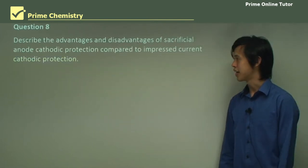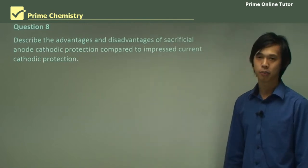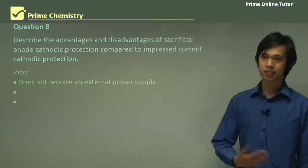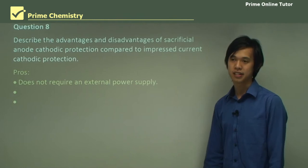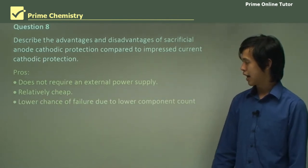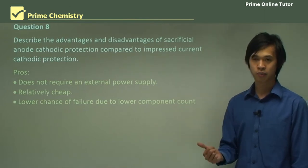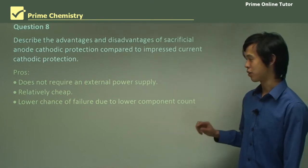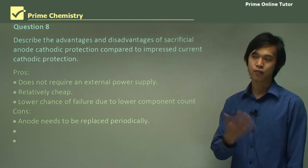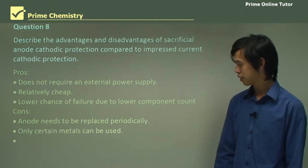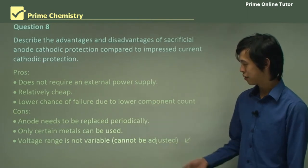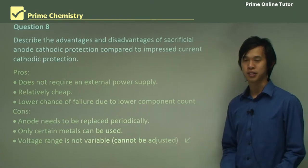Describe the advantages and disadvantages of sacrificial anode cathodic protection compared to impressed current. Pros: sacrificial anodes don't require a power supply, which is good because not everyone has access to electricity. It's relatively cheap because zinc and magnesium are inexpensive metals. There's a lower chance of failure because there are fewer components — just a piece of wire and a piece of magnesium or zinc. Cons: the anode has to be replaced periodically, accumulating costs over time. Only specific metals can be used, such as magnesium and zinc. The voltage range is not variable, so we can't control voltage like we can with an impressed current system.